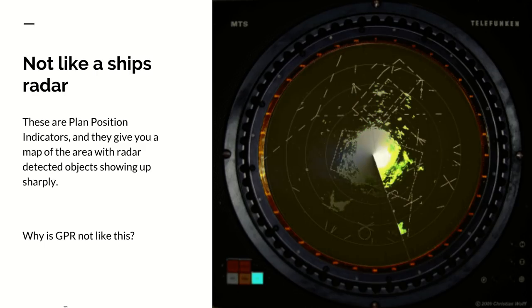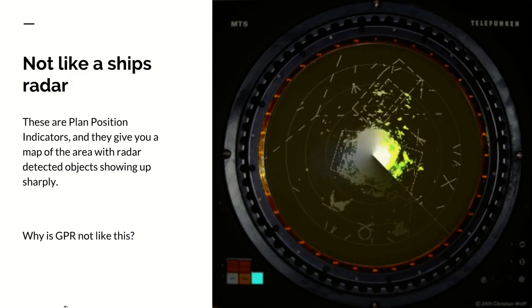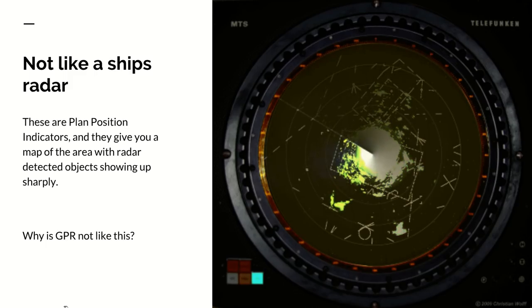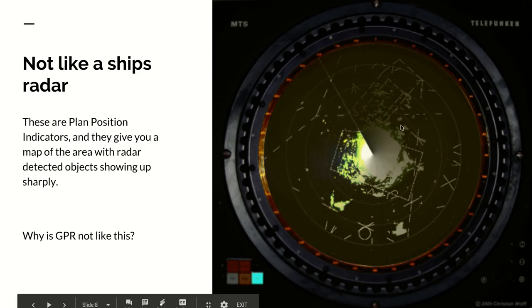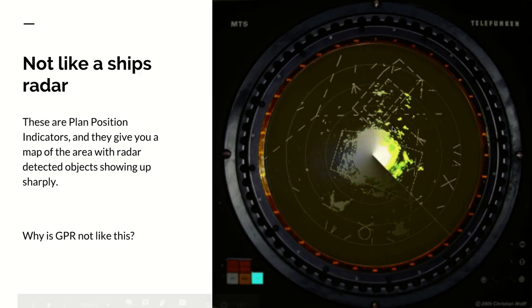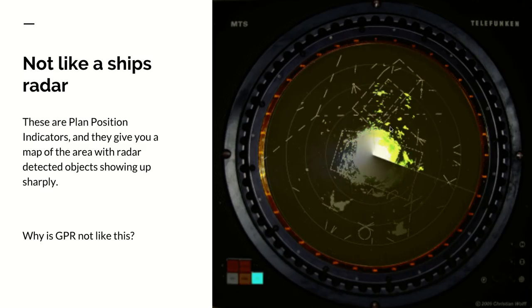Now why don't you get a nice picture like on a ship's radar? This type of radar set is a plan position indicator and when you're on a ship and read those radars you see things which are clearly recognizable as islands, other ships and it looks just like a map. Why doesn't ground penetrating radar give you this kind of nice picture?